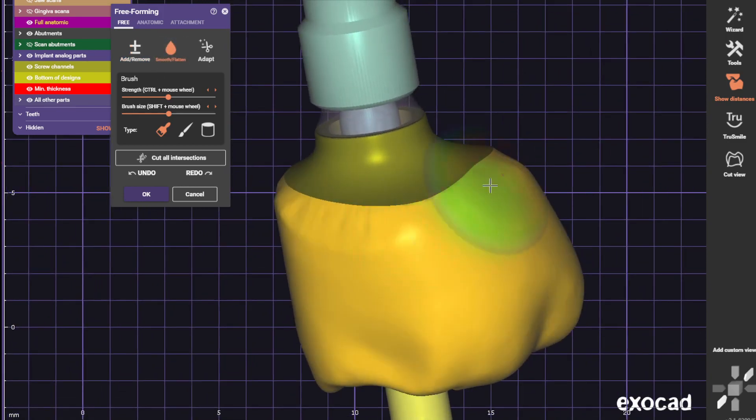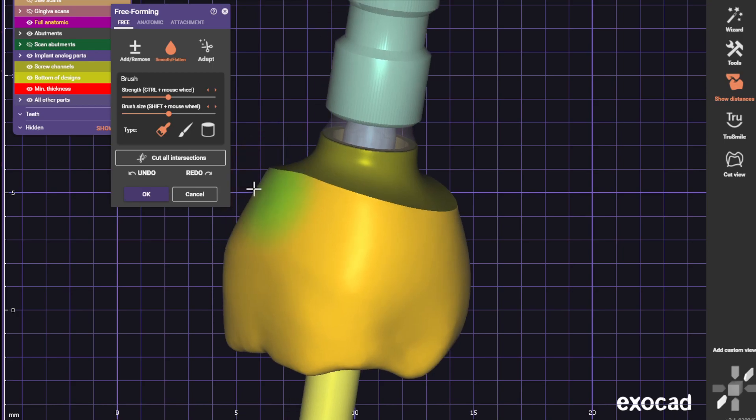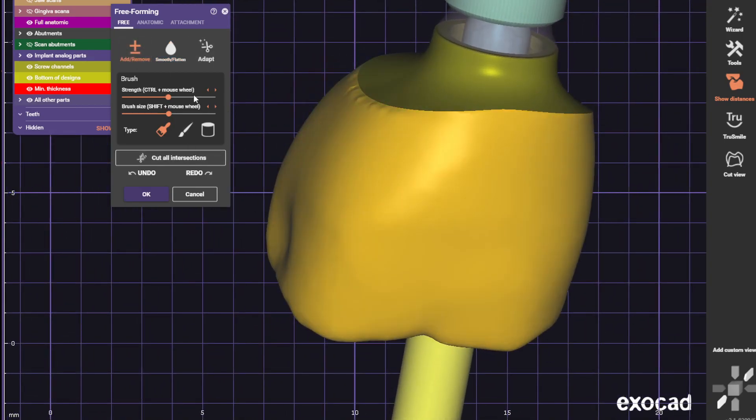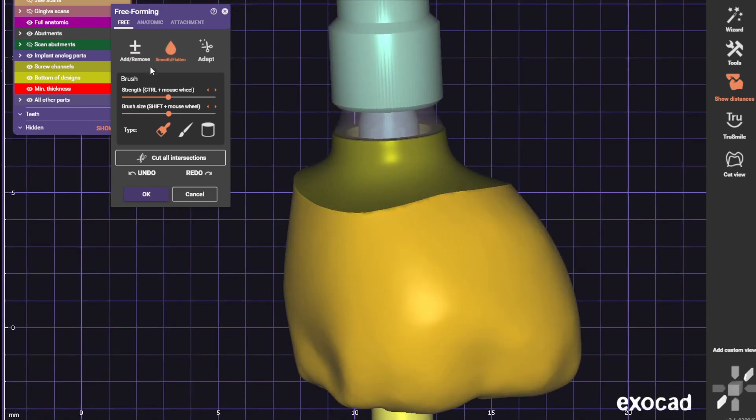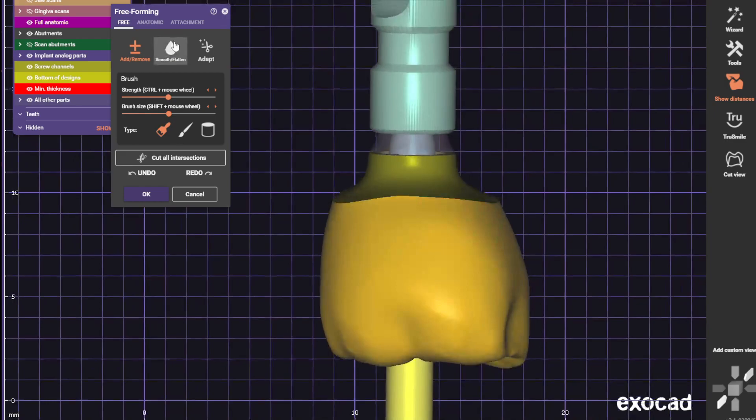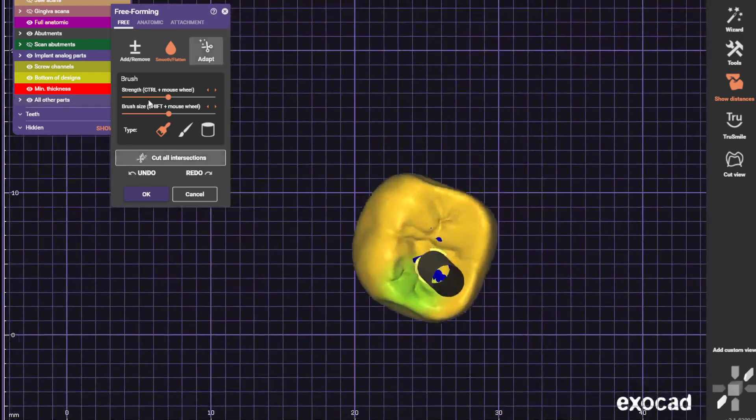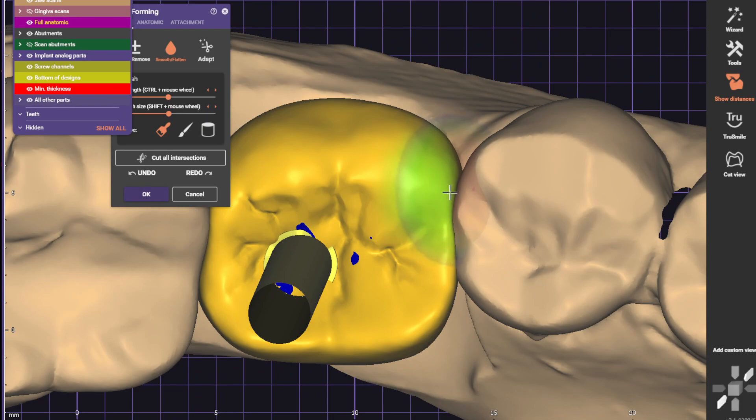Let me just smooth up around the margin here where we cut away. I always like to add first and then smooth. I hold down the shift hotkey a lot when I do the smoothing—makes it move faster.